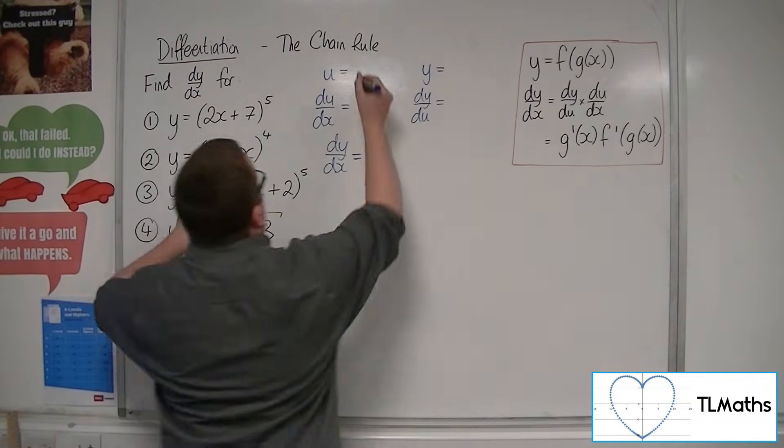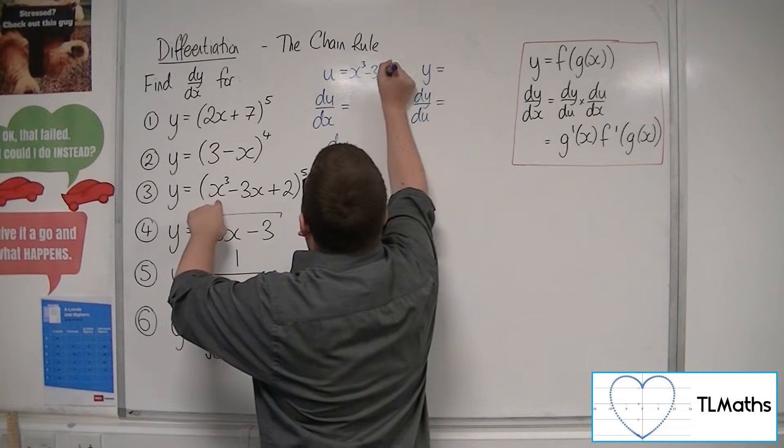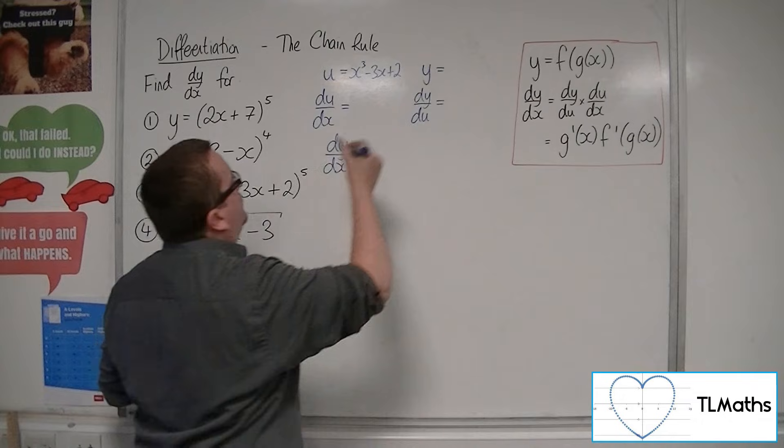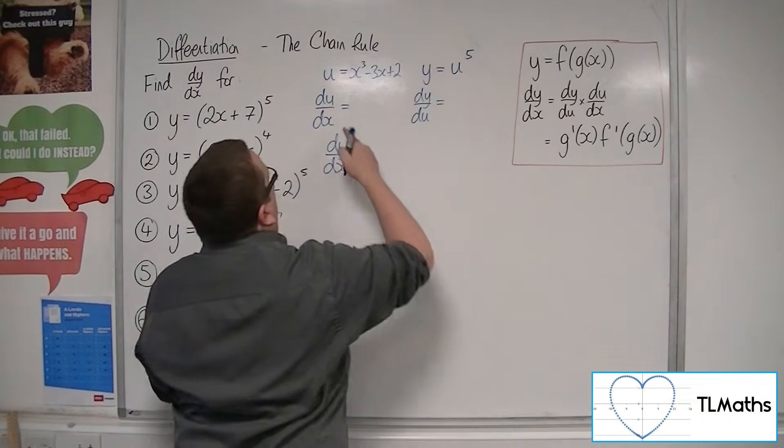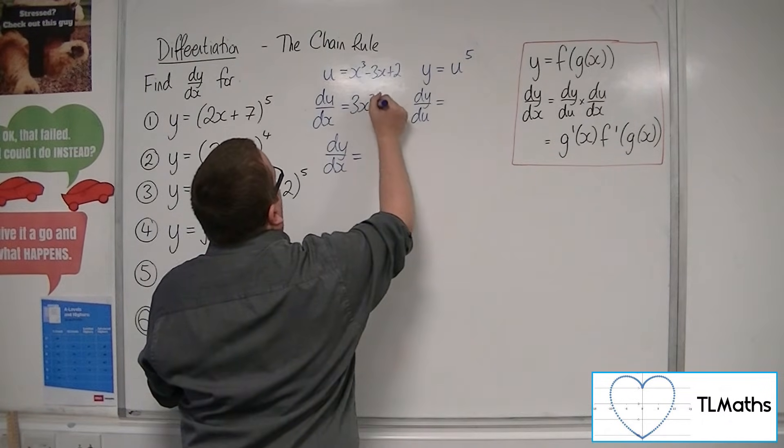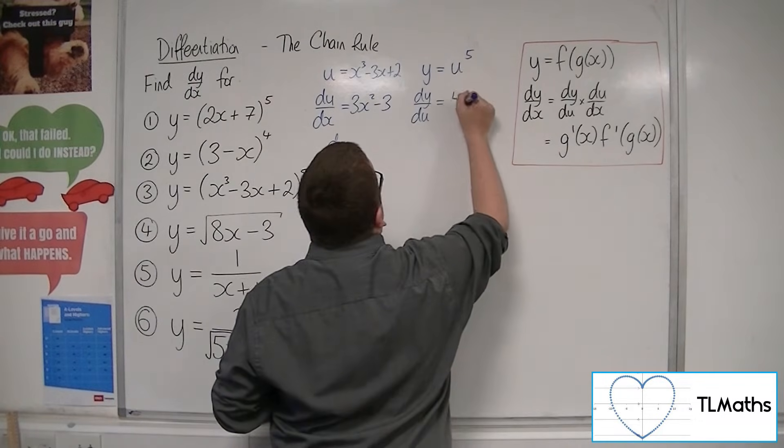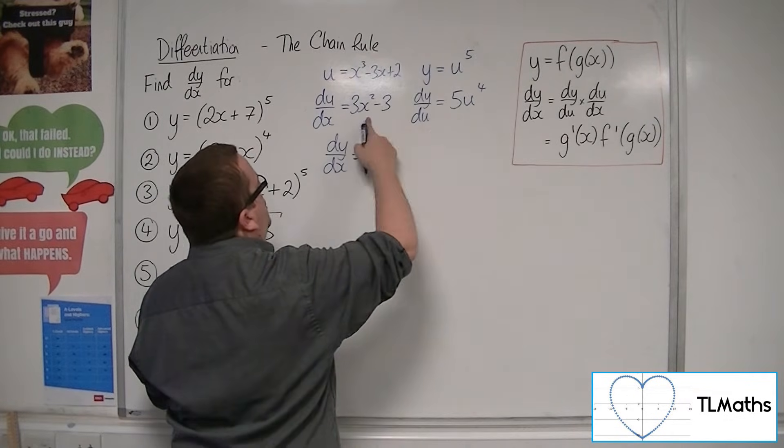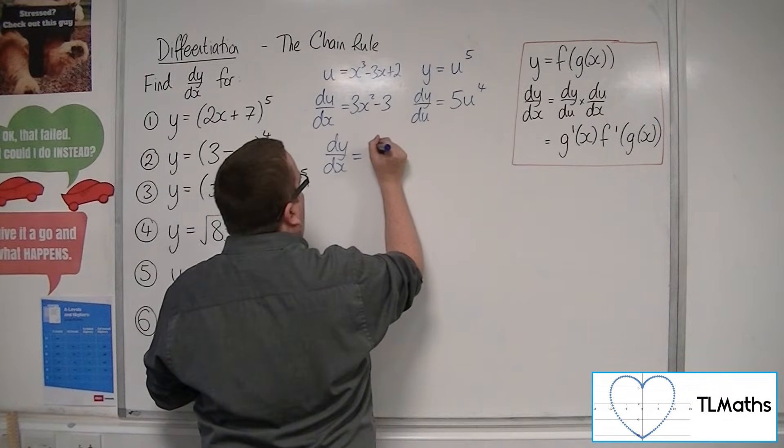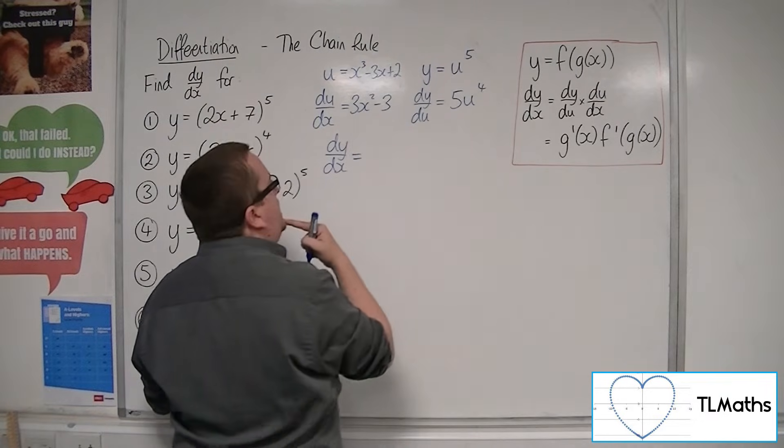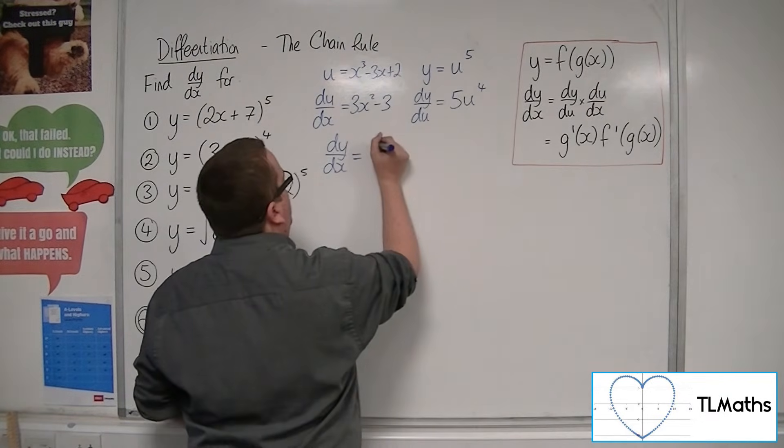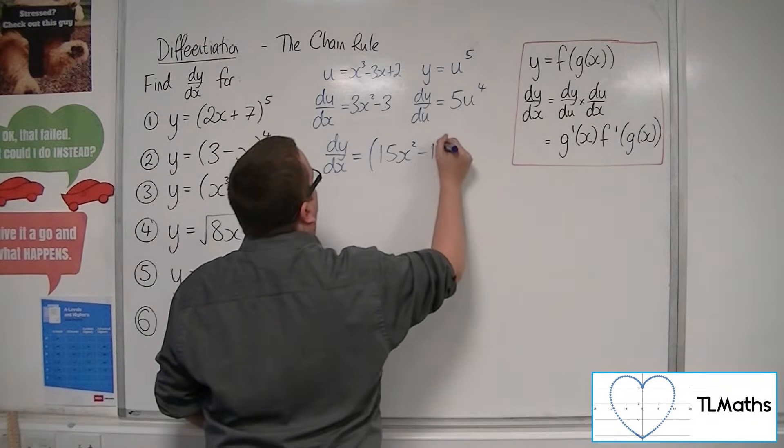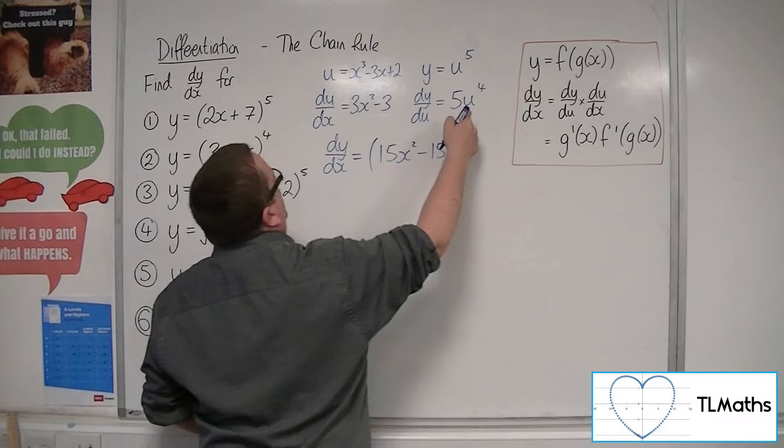This one. We've got the u must be what's inside the bracket. So we now have y equals u to the 5. So du by dx is 3x squared minus 3. Dy by du is 5u to the 4. So when we multiply these two together, I'm going to write it as 5, well, probably best if I write it completely. So 5 lots of this. So 15x squared minus 15, then u to the power of 4.